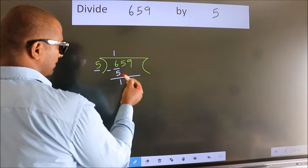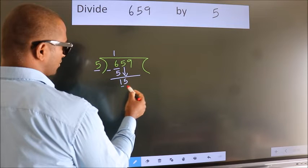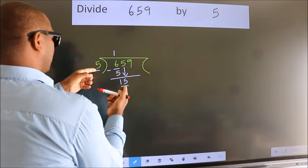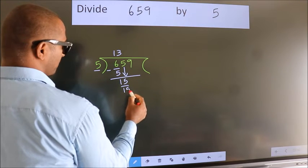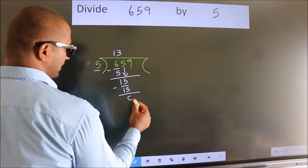After this, bring down the beside number. So 5 down. So 15. When do we get 15 in 5 table? 5 threes 15. Now we subtract. We get 0.